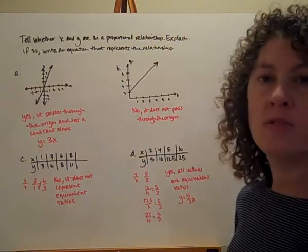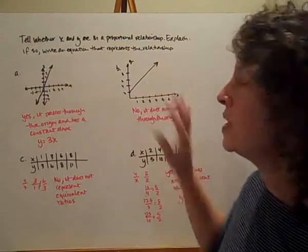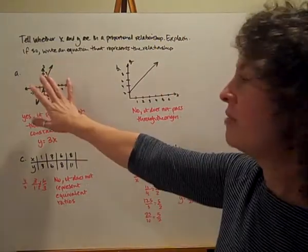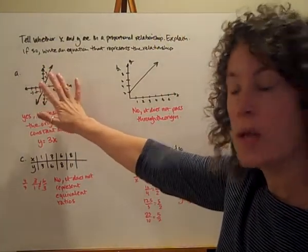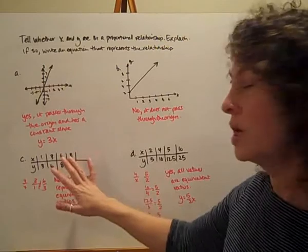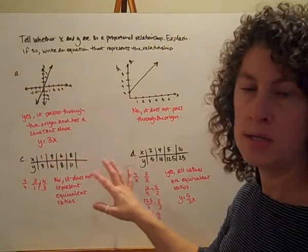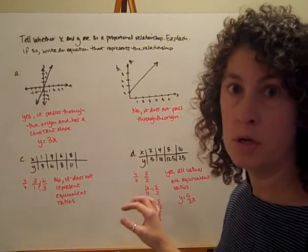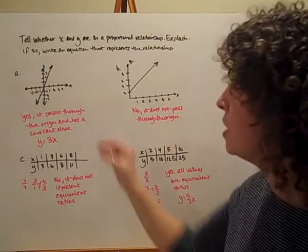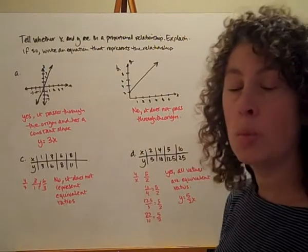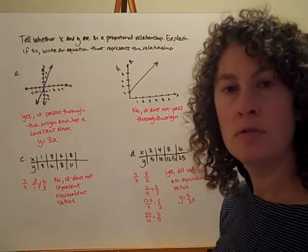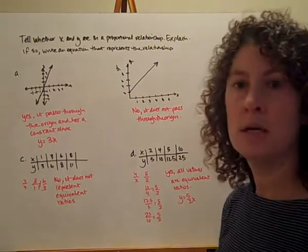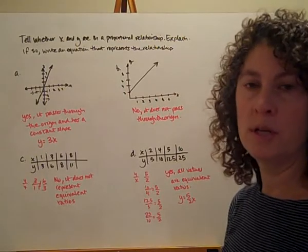So we're checking for different pieces depending on whether we're looking at a graph or a table. For a graph, we want to see it goes through the origin and has a straight line. If we're looking at a table, we want to see that it has a constant of proportionality — they all represent equivalent ratios. And that ratio or slope goes into our equation if we're writing a direct variation equation to represent the proportional relationship.